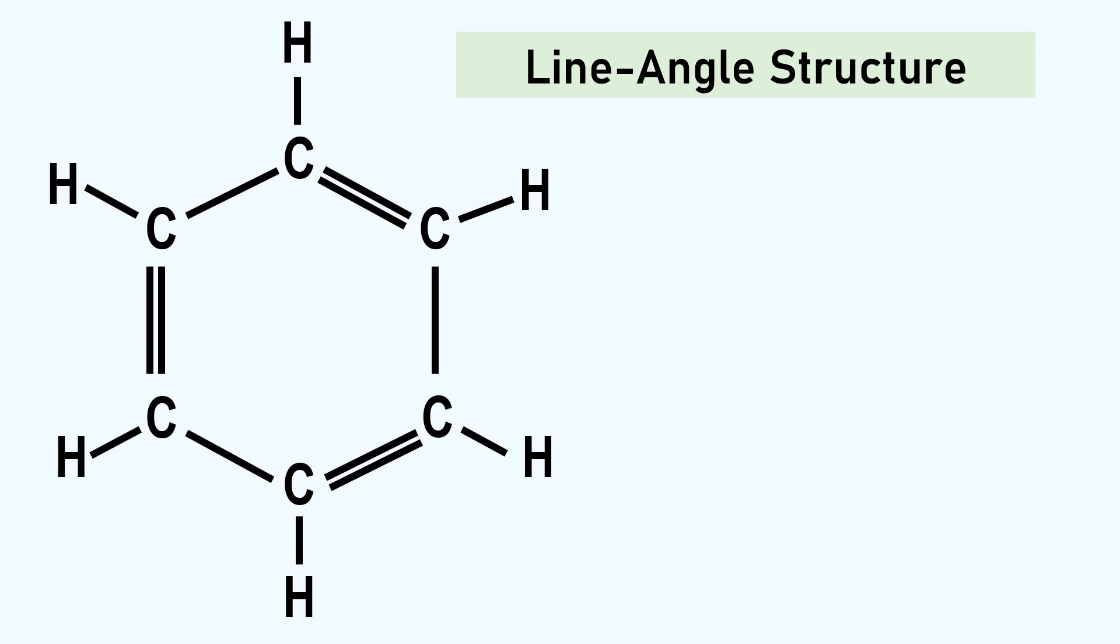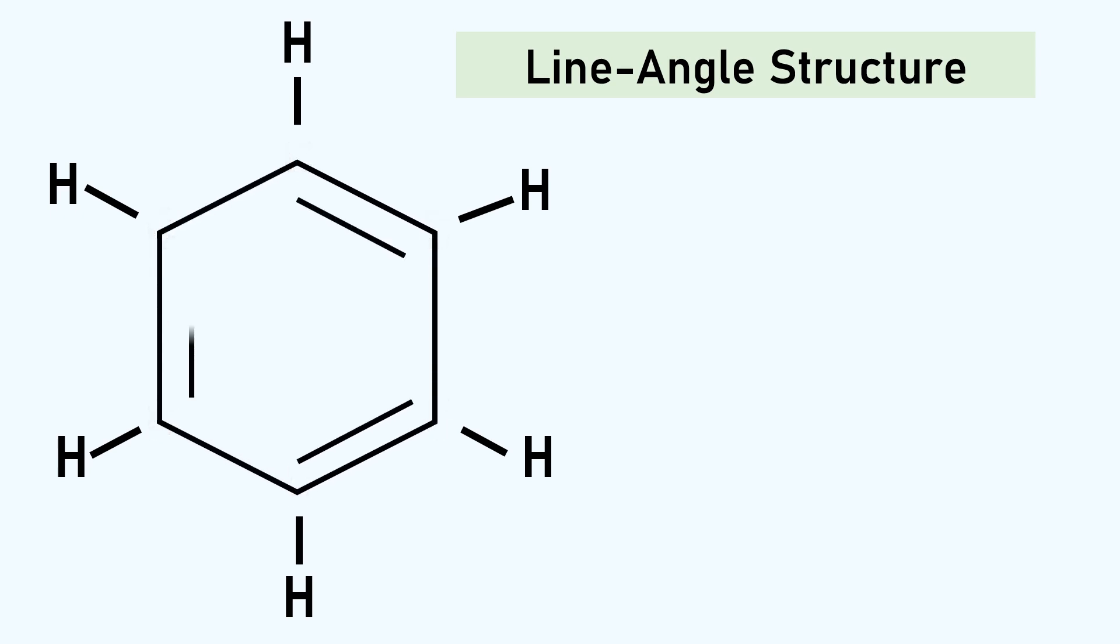Recall, in line-angle structures we assume that there's a carbon atom at the end of a bond line, or the corner. And we assume there's enough hydrogen to complete the octets. So I'll remove the hydrogen.